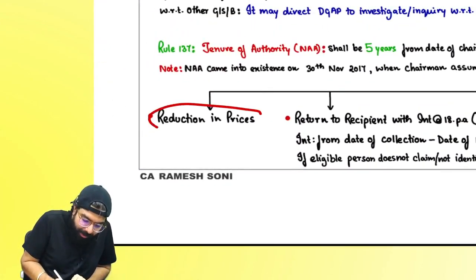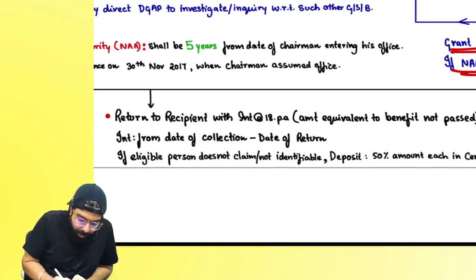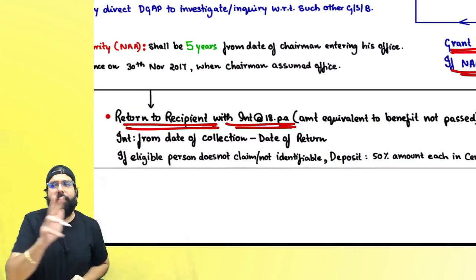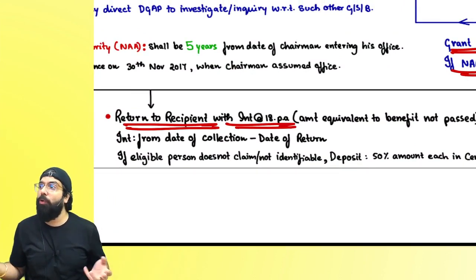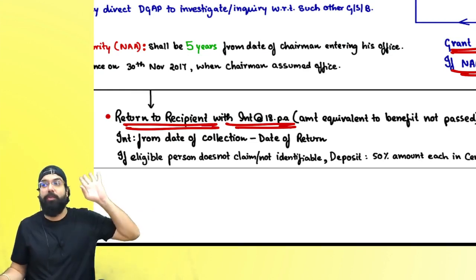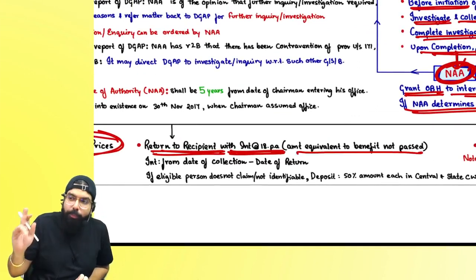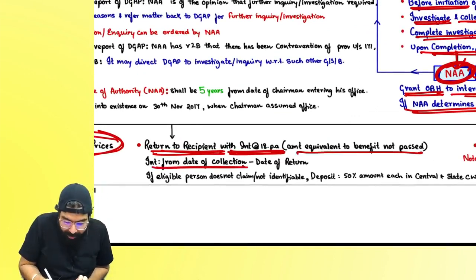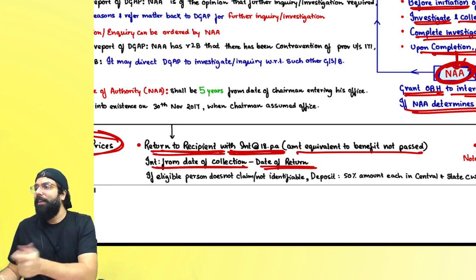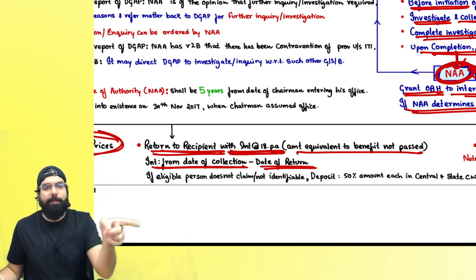When the NAA passes an order, it can direct reduction in price — telling the supplier to reduce the dosa price. It can also order return to the recipient with interest — if you made 2 rupees extra profit, return those 2 rupees with interest at 18% from the date of collection till the date of return. If the consumer cannot be identified, put it in the Consumer Welfare Fund. The amount equivalent to the benefit not passed on must be returned.